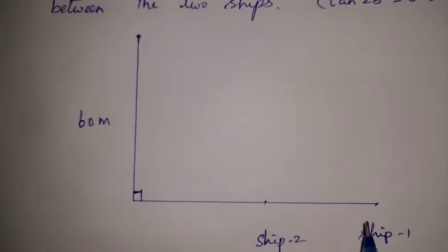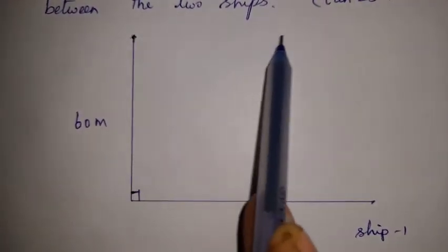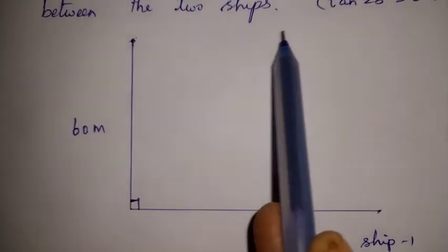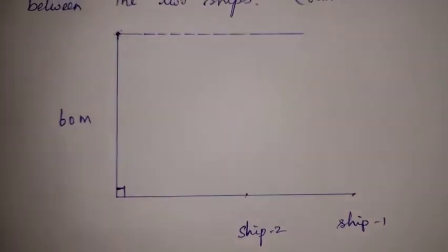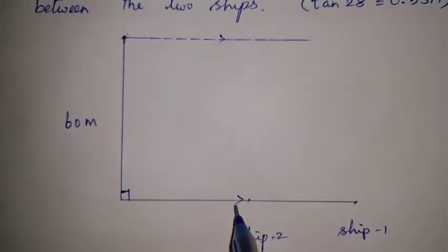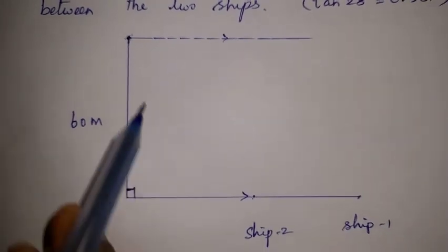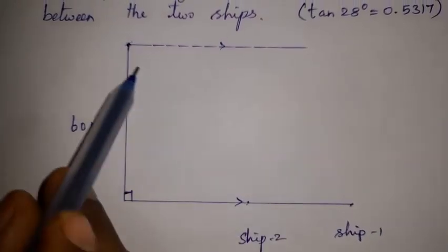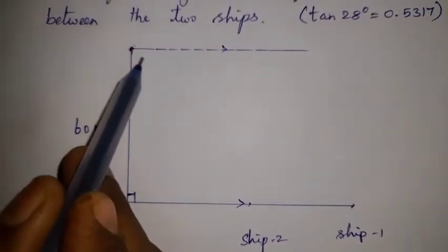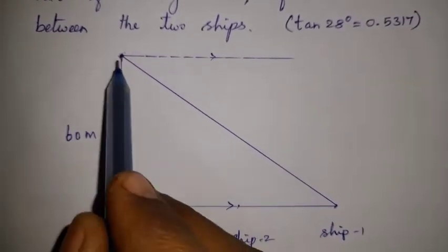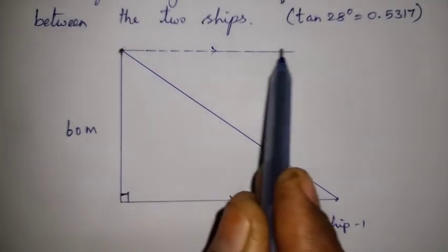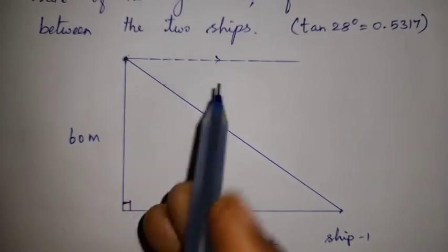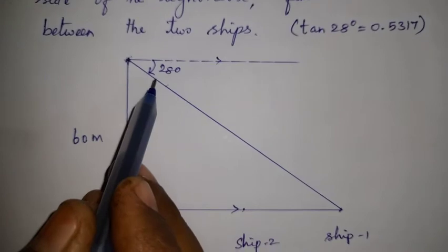We will drop a horizontal line from the top of the lighthouse, parallel to the sea line. The starting point is the top of the lighthouse and it is parallel to the sea level. Ship 1 is at 28 degrees angle of depression. From the top of the lighthouse, draw a straight line down to ship 1. The angle between the horizontal line and the line of sight to ship 1 is 28 degrees.